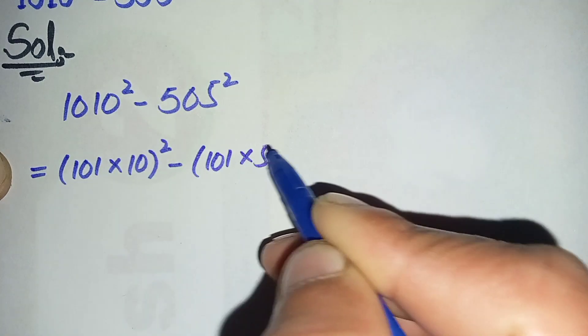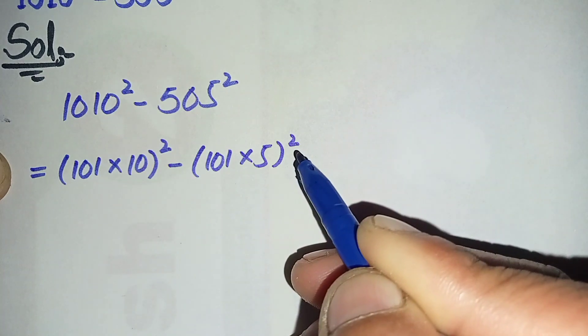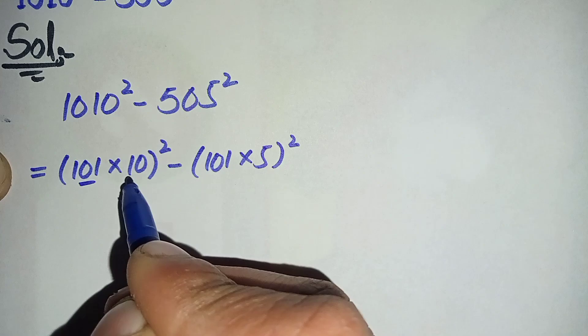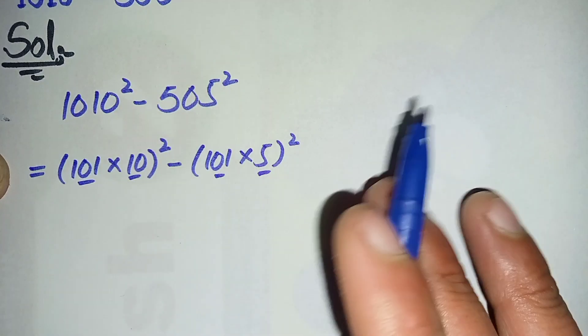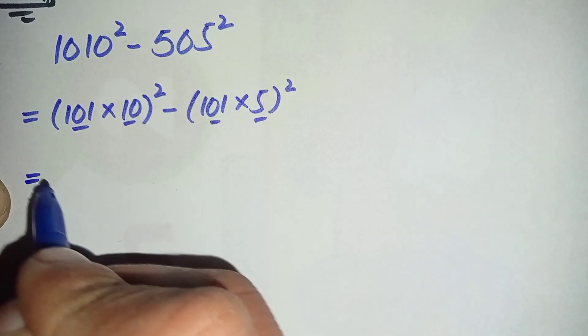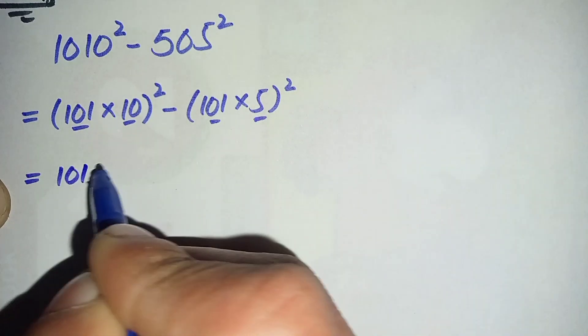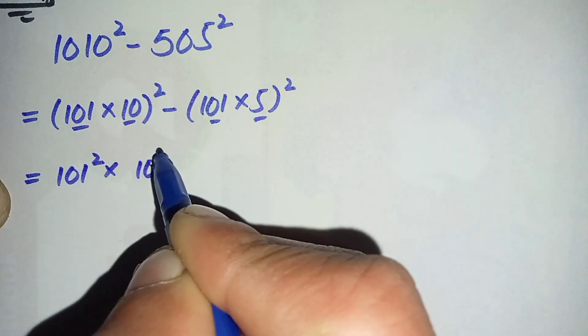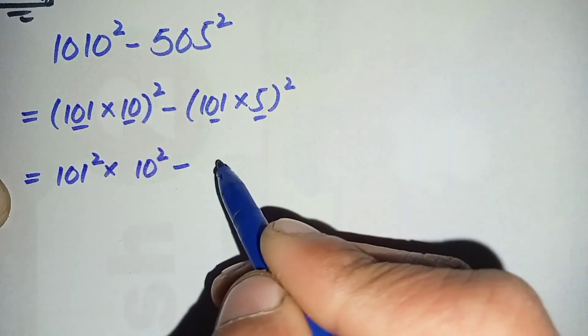Now in the next step I will spread this square over both the numbers in both the terms. So this equation will become 101² times 10² minus 101² times 5².